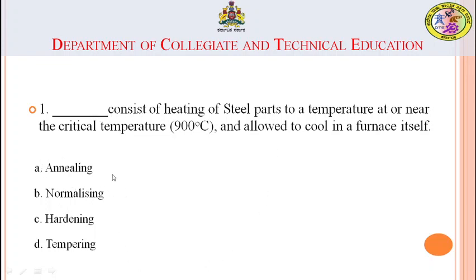In the annealing process, steel parts are heated at or near the critical temperature — around 900 degrees Celsius — and then allowed to cool in the furnace itself. So the answer is annealing.